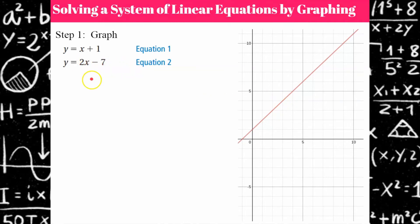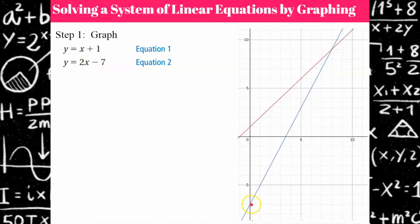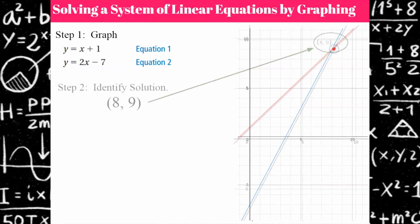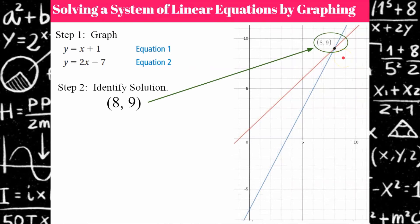Now we're going to graph the second equation. That has a y-intercept of negative 7 and a slope of 2. Rise two, run one. Rise two, run one. It's going to be very important for you, if you're not graphing on a computer, to use graph paper with a ruler. If we're not drawing straight lines, the point of intersection is going to be difficult to identify or you'll be off.